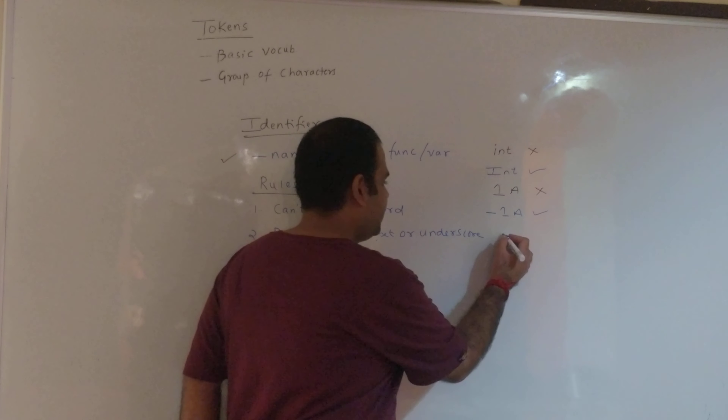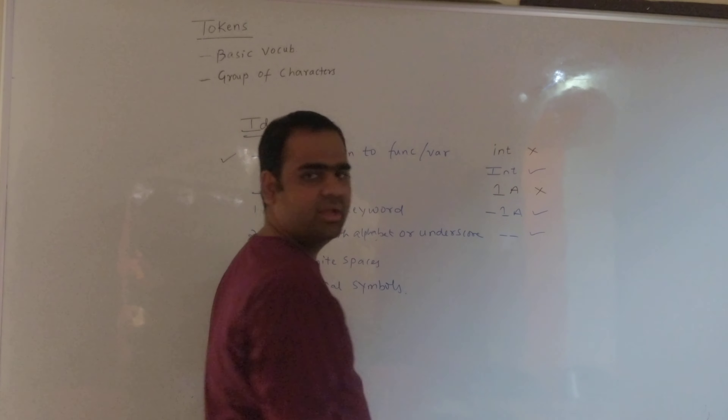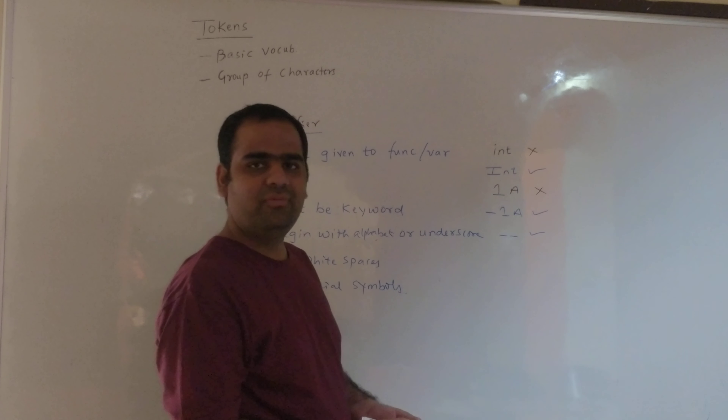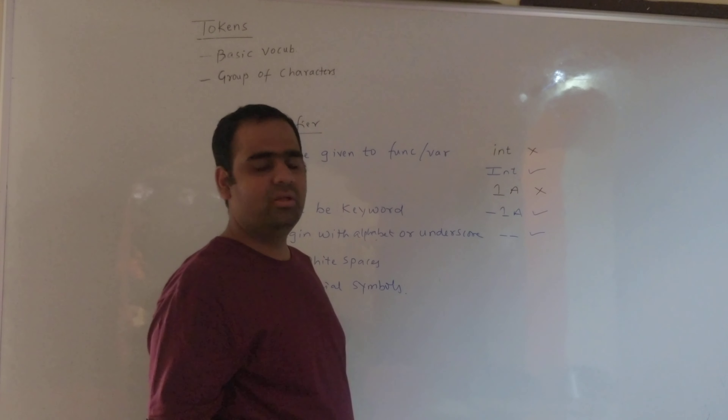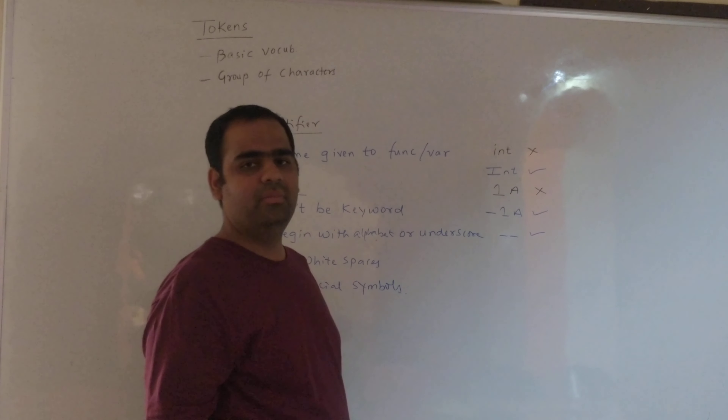If we write double underscore '__', it is again a valid identifier because identifiers can begin with an underscore.